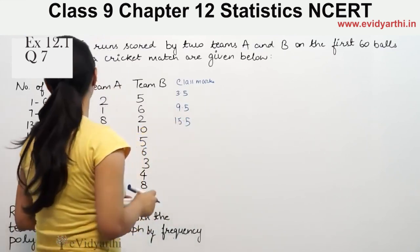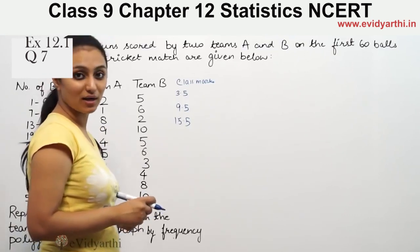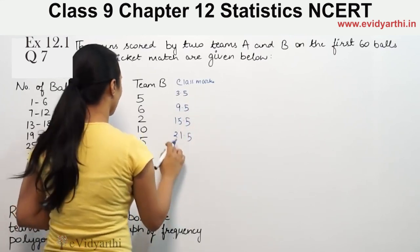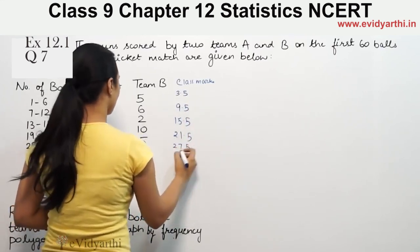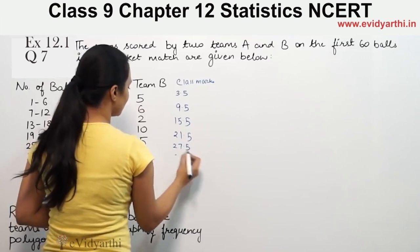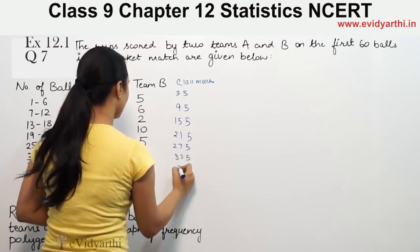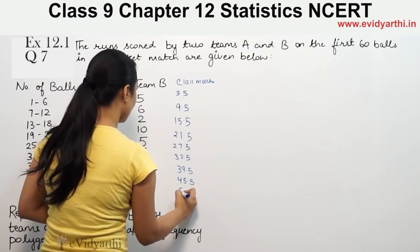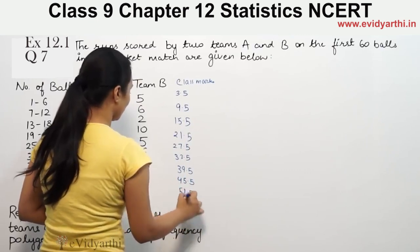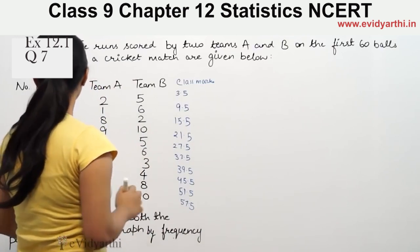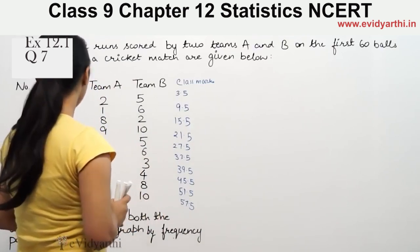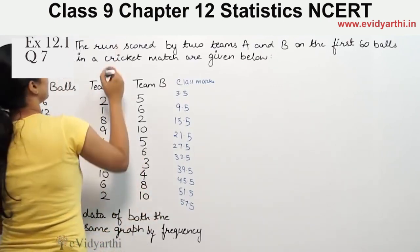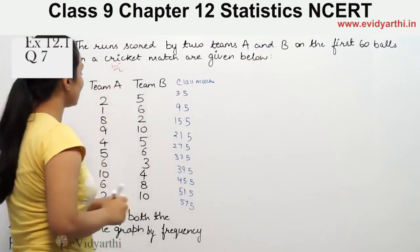19 plus 24 is 43, divided by 2 gives 21.5. Continuing this way we get 27.5, 33.5, 39.5, 45.5, 51.5. And 55 plus 60 is 115, divided by 2 gives 57.5. So these are our class marks.